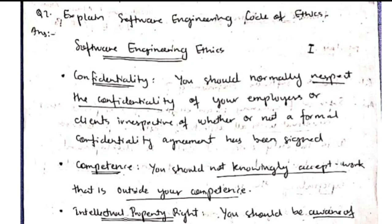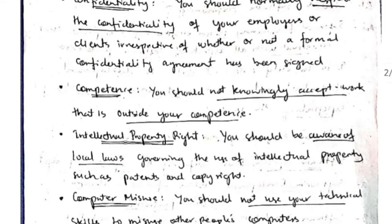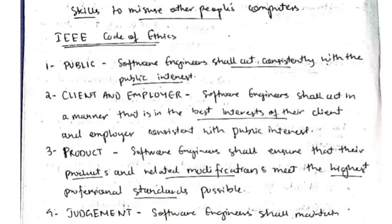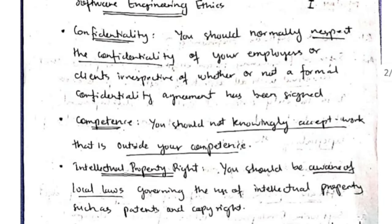To explain the software engineering code of ethics: for four marks, mention four points; for eight marks, also include the IEEE code of ethics. The first point is confidentiality — you must respect the confidentiality of customers.